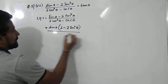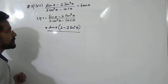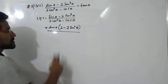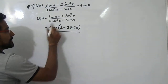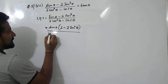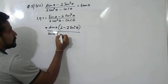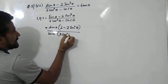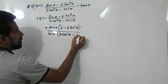Divided by — in the denominator it's 2 cos³θ minus cos θ. Cos θ is common in both, so we'll take cos θ outside, giving us cos θ times (2 cos²θ minus 1).